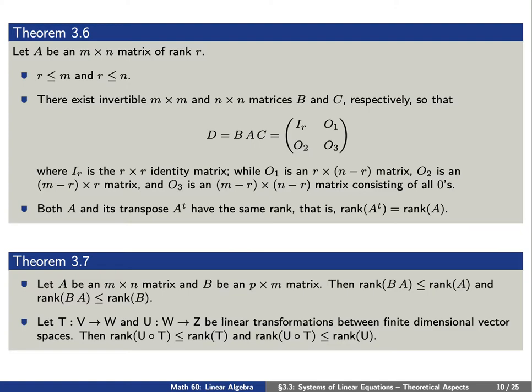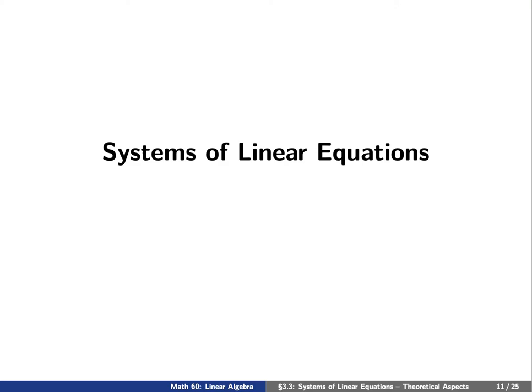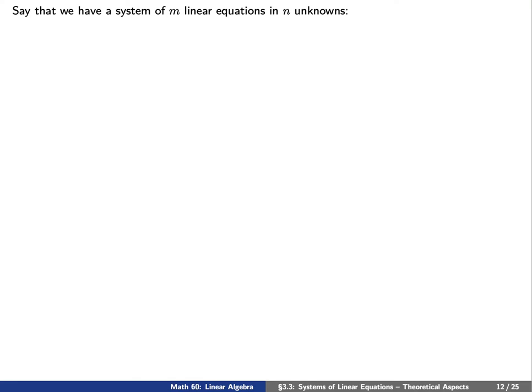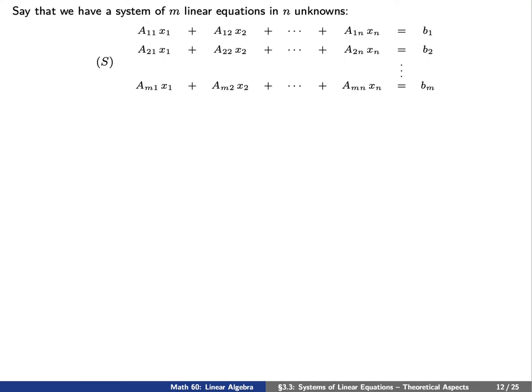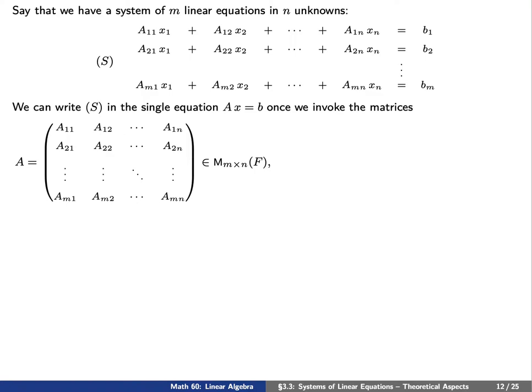We'd like to explain how all of this is useful in solving a system of linear equations. Say that we have a system of M equations and N unknowns, which we'll denote by capital S. We can write this system S as a single equation A times X equals B, where A is an M by N matrix consisting of the coefficients A_ij on the left of the equal signs.